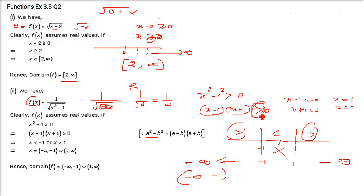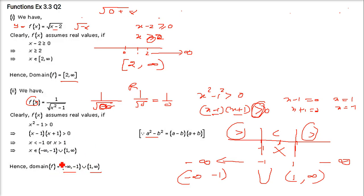So the domain is from minus infinity to minus 1, union 1 to infinity. Since these are two separate regions, we combine them with a union. These are the acceptable values. You cannot have any value between minus 1 and 1, including minus 1 and 1 themselves.